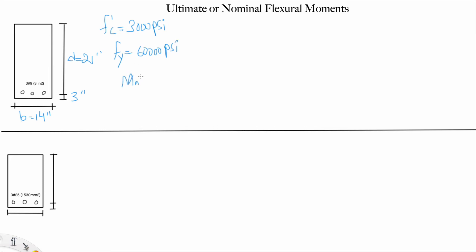What's Mn? In order to solve Mn, we need to find T or C and we need to find d minus a over 2. We always start with T equals C, the equilibrium. What is T? It's the area of steel multiplied by fy, which equals C. What is C? It's 0.85 multiplied by fc prime multiplied by a multiplied by b.